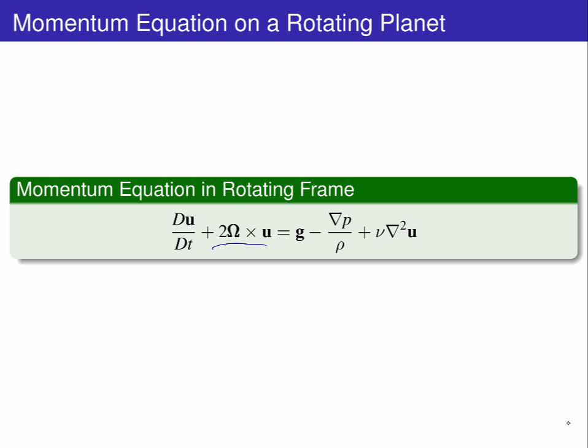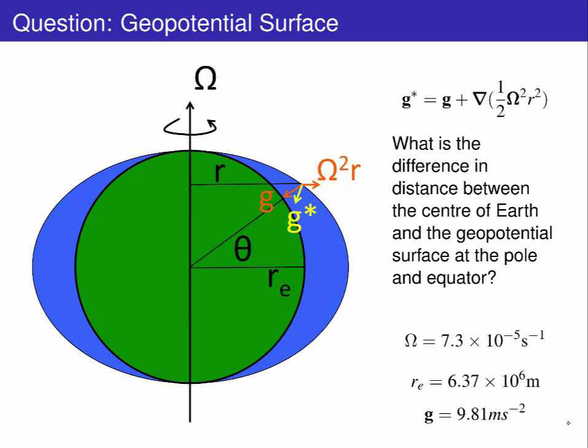Bringing the Coriolis and geopotential terms together into the Navier-Stokes equation gives us the momentum equation for flow on a rotating planet. We'll finish with a question. What is the difference in distance between the centre of Earth and the geopotential surface at the pole and at the equator?